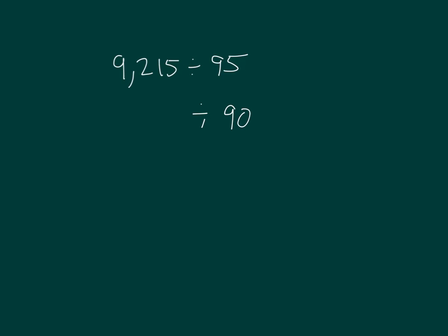If we divide by 90, and we estimate our divisor to 90, then we could say that 9,215 is close to 9,000. So we'll look at 9,000 divided by 90. Those would be good compatible numbers.